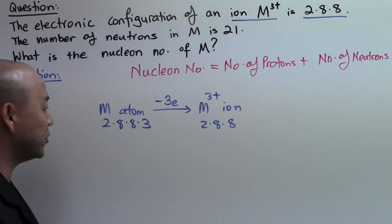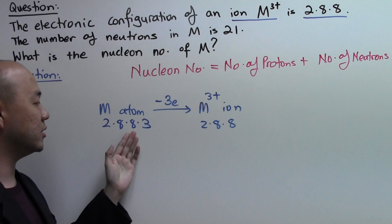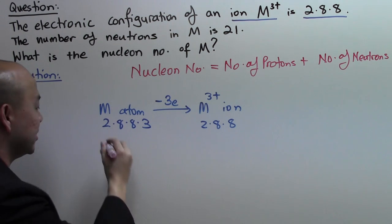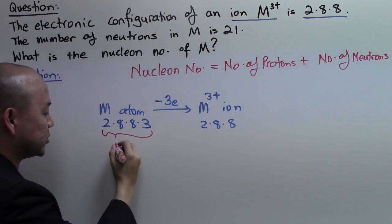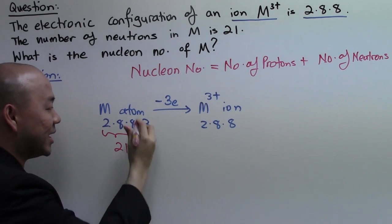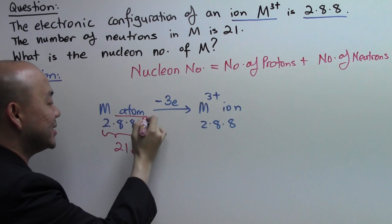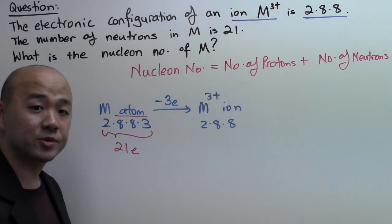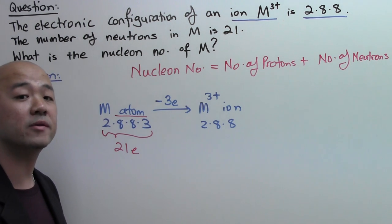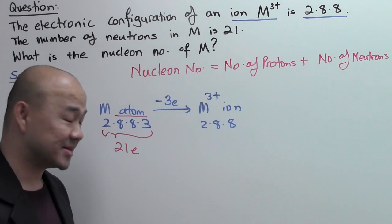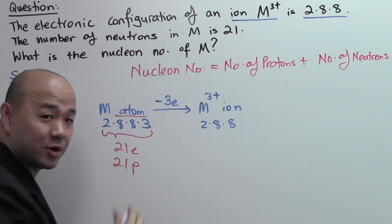And once you know the electronic configuration is 2.8.8.3, it basically tells you that the number of electrons will be 21 in the M atom. And for an atom, we understand that it's electrically neutral. The number of protons and the number of electrons will be the same. So that tells you it has 21 protons.